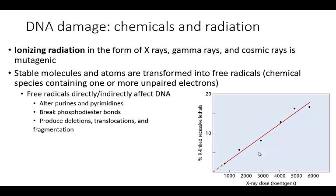Ionizing radiation — found in the form of x-rays, gamma rays, and cosmic rays — is also going to be very mutagenic. What you can see is it's pretty much a one-to-one ratio: the more x-ray dose you get, the more x-linked recessive alleles you'll see. It's pretty much a linear effect.